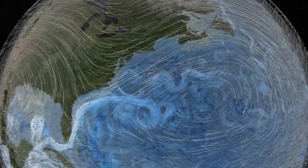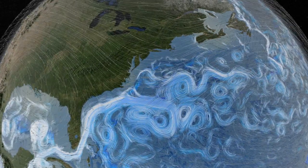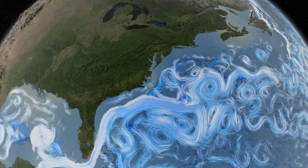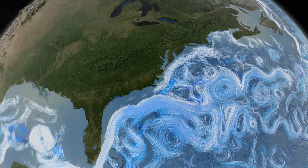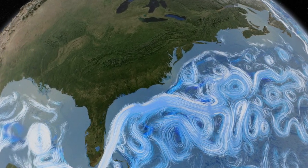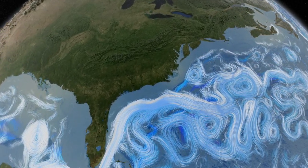Wind currents drive surface ocean currents. This computer simulation shows the Gulf Stream winding its way along the coast of North America.